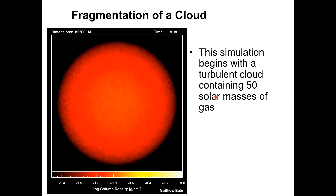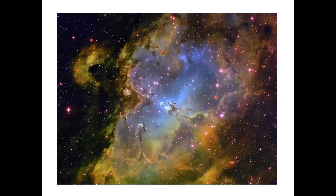The point there is you have a 50 solar mass cloud — it's not just going to collapse into a single 50 solar mass object. It's a very dynamic, chaotic process by which stars form, and the cartoon version is only just that, a cartoon version. When I look at real star forming regions, they might look like this. This is a very typical star forming region.